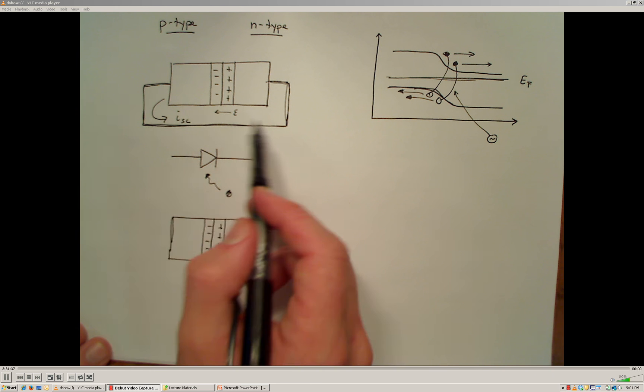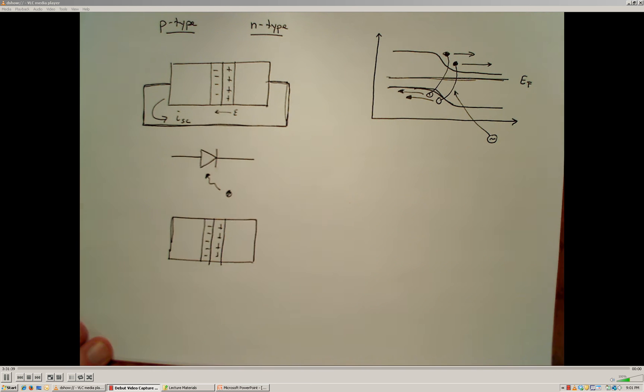we generate a current. And this is the short-circuit current that you measured in the solar cell lab.